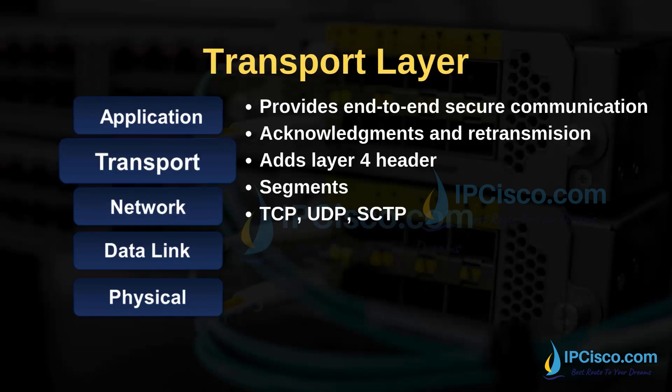The transport layer is the fourth layer of the TCP/IP model. It is responsible for end-to-end secure communication. Acknowledgements and retransmission are also used in this layer. Transmission Control Protocol (TCP), User Datagram Protocol (UDP), and Stream Control Transmission Protocol (SCTP) are the common protocols used in the transport layer. The transport layer uses a header and by doing this, it creates segments.